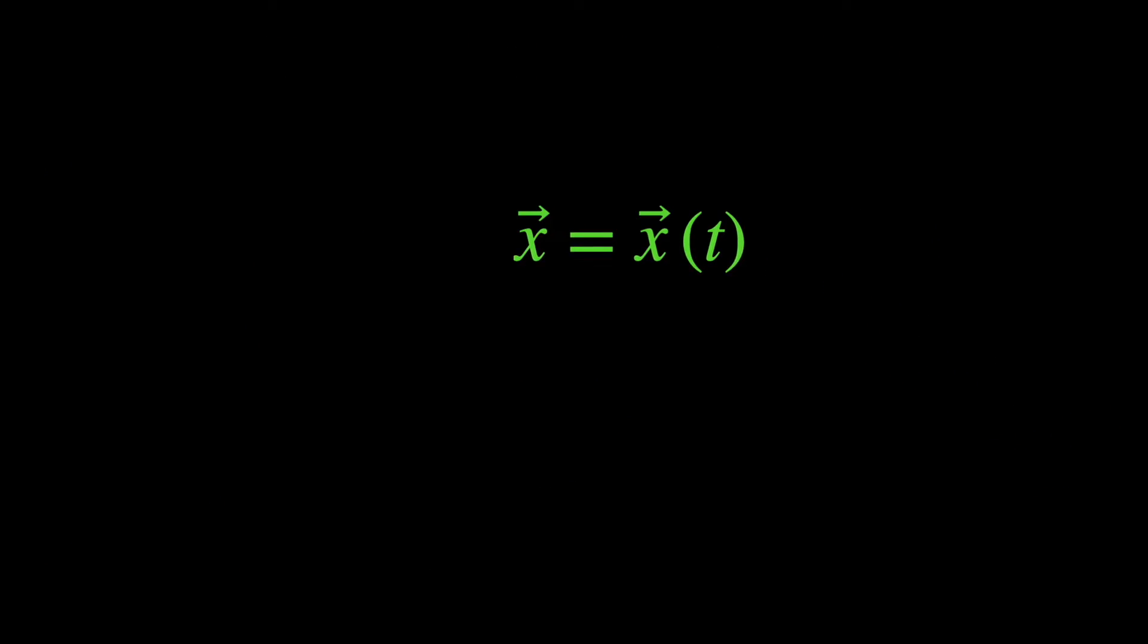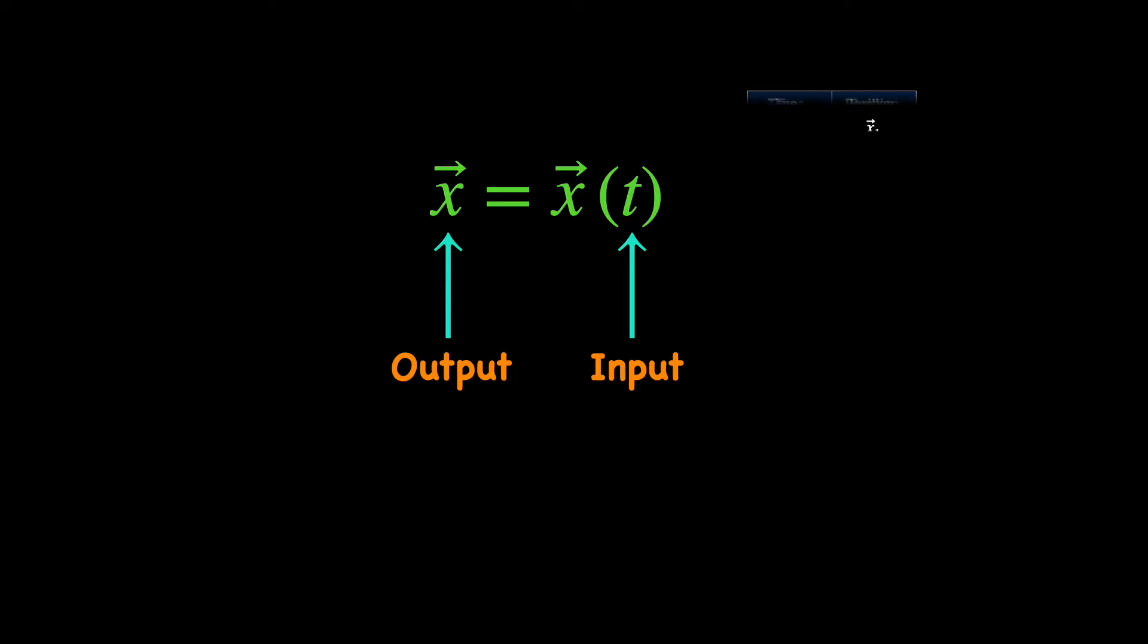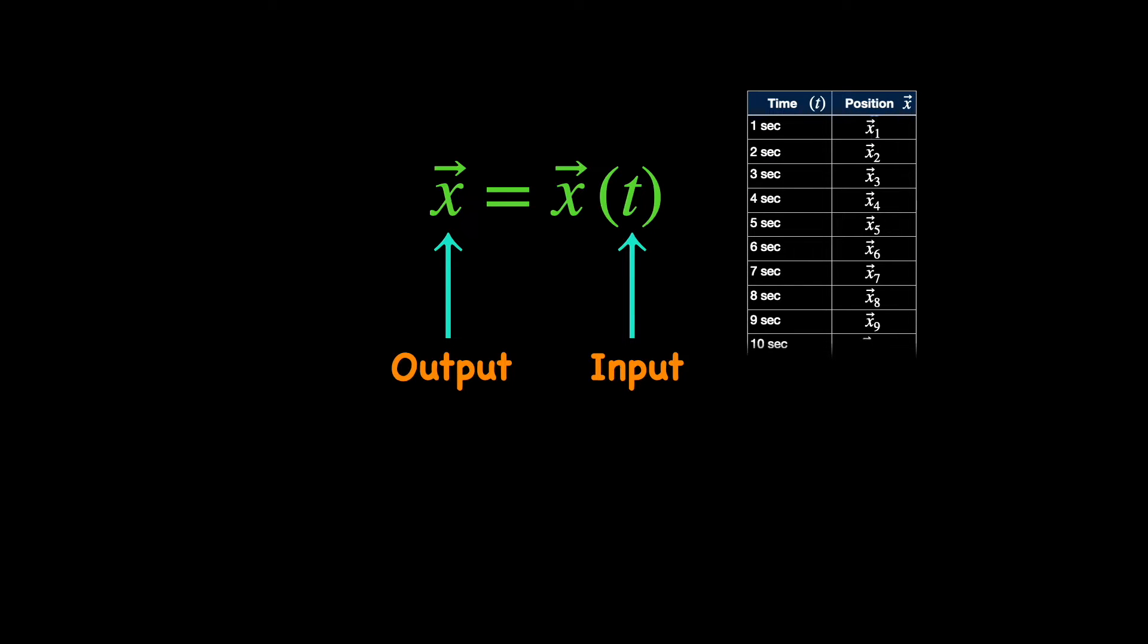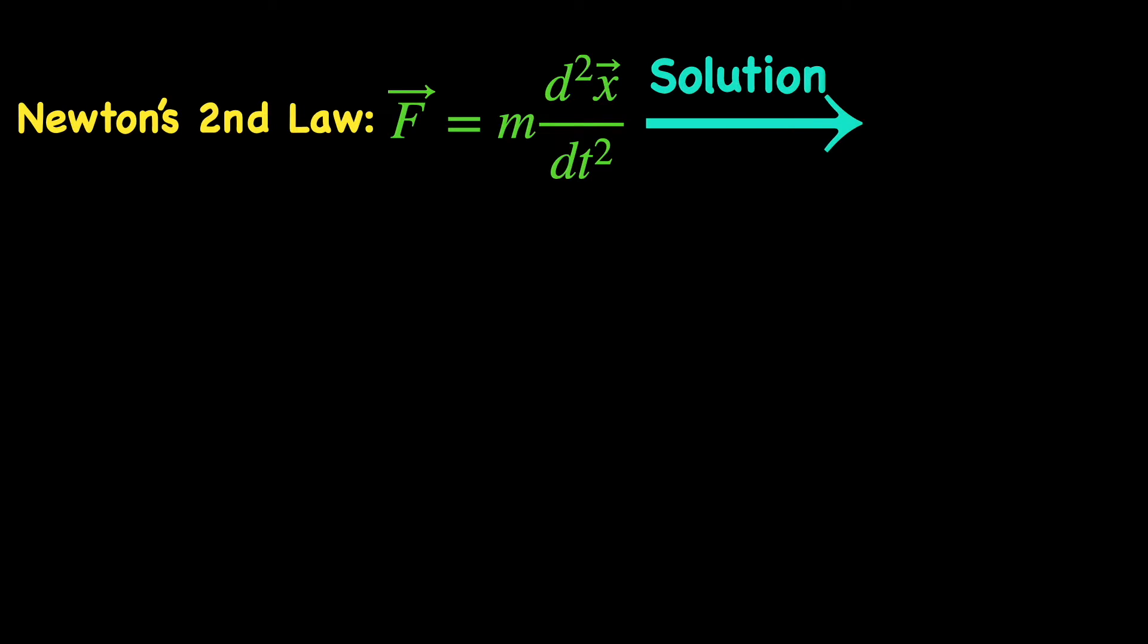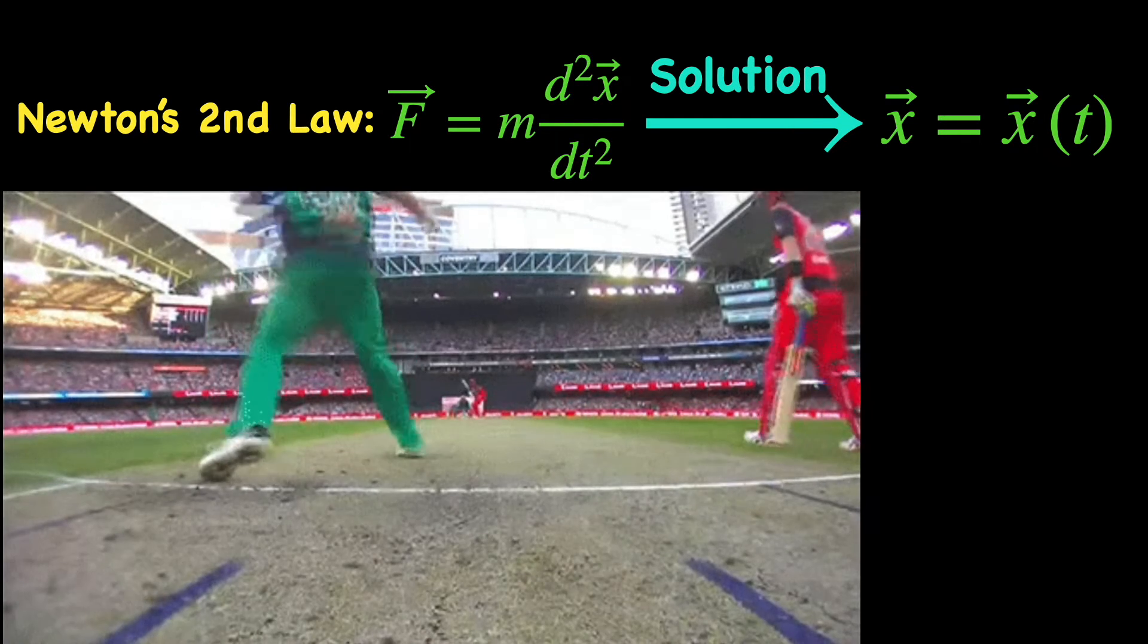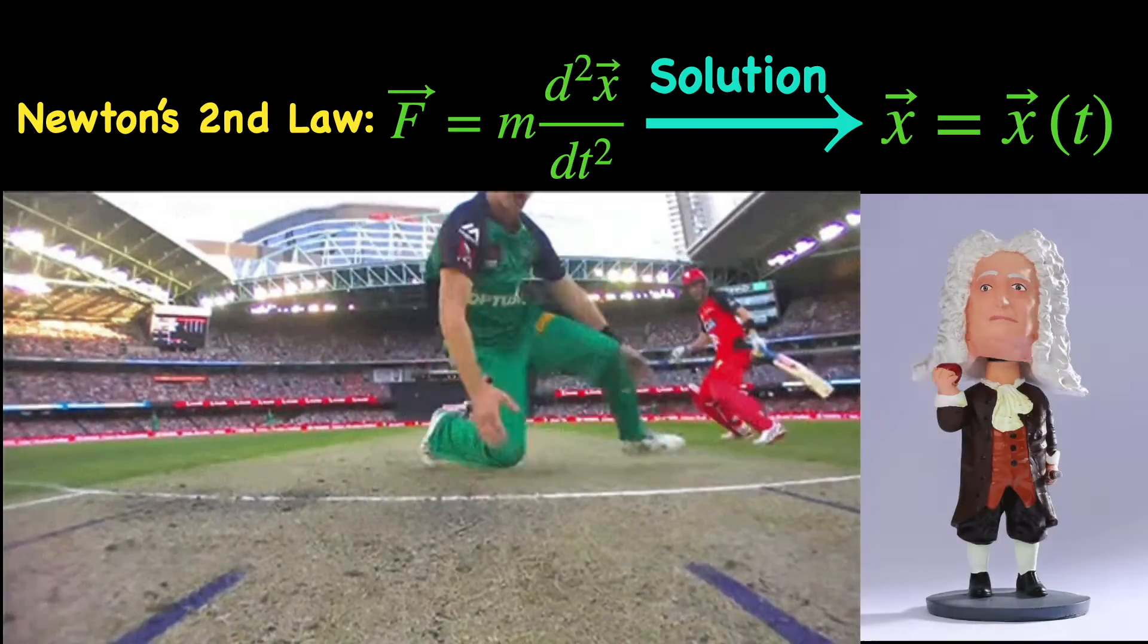Position being a function of time means we can punch in the value for any future time instant, let's say t equal to t1 or t2 or t3 etc. in the function and it gives us a number which is the value of the particle's position x at t1 or x at t2 or x at t3 and so on, that is at any future instant. Thus the function x(t) represents the trajectory of the particle mathematically for all times. So Newton's second law gives us this power of prediction in the sense that it identifies the trajectory the particle is going to follow under a given force.